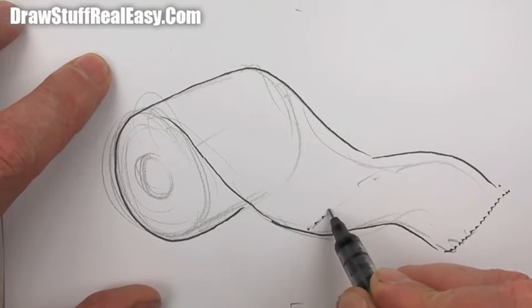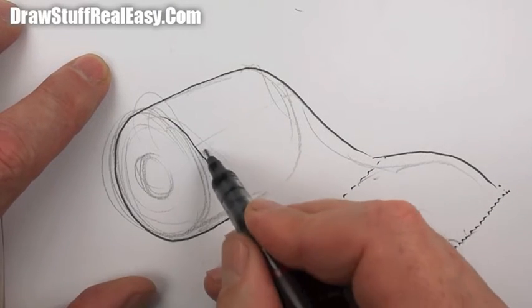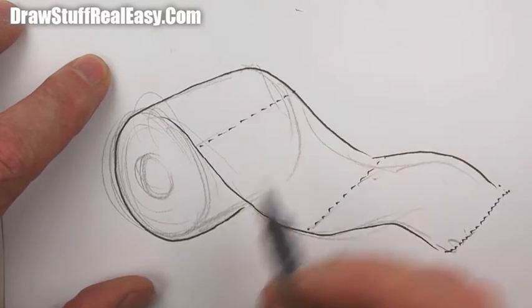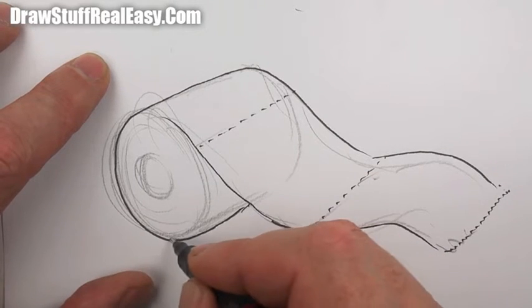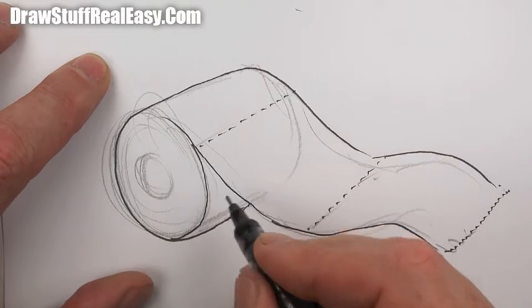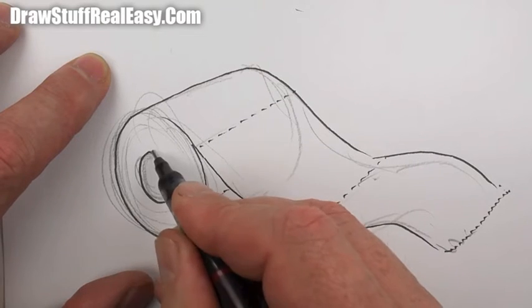You know what, the cardboard tube in the middle—you're gonna want to have some shading like that.